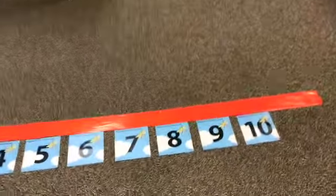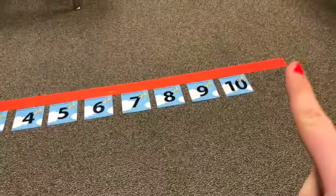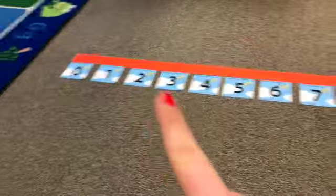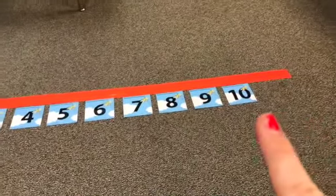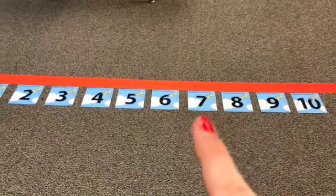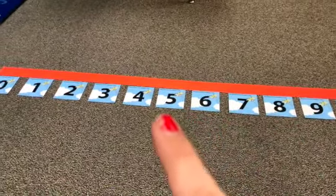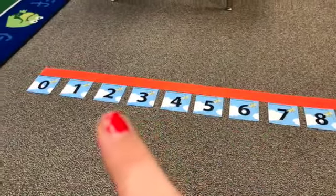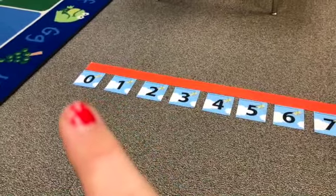So now we're going to count backwards. Are you ready? On our number line. See, it's a line with numbers. So we're going to start on ten. Ready? Ten, nine, eight, seven, six, five, four, three, two, one, zero.